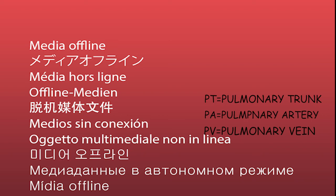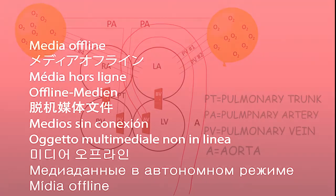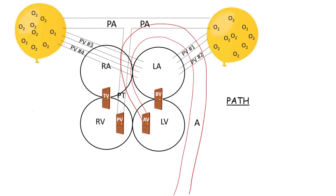And finally, the A refers to the aorta. So what we're going to do now is follow the path of our blood drop through the heart to all of the cells of the body and back to the heart. Let's start at the right atrium.